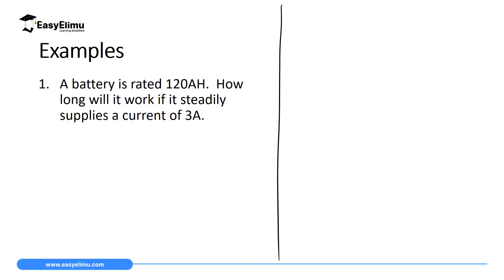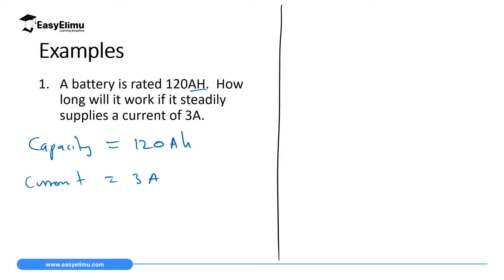Question 1: A battery is rated 120 ampere-hour. Since ampere-hour is the SI unit of capacity, we are given capacity = 120 Ah. How long will it work if it steadily supplies a current of 3 ampere? So current = 3 A, and we are looking for time.